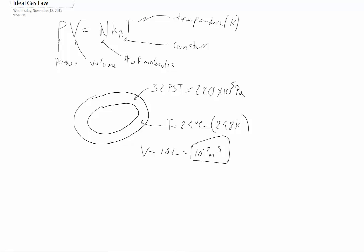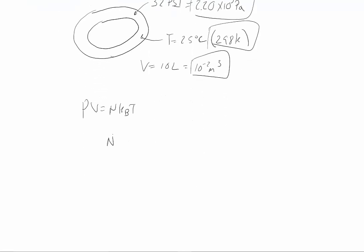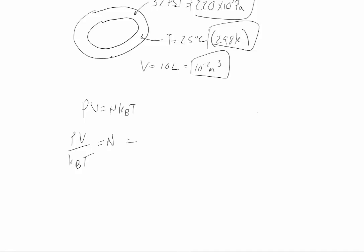So let's go ahead and use all of our values, and we can actually find how many gas molecules are inside of a normal tire. We'll just solve for N. So we get PV is equal to NkBT. We get N is equal to PV divided by kBT. If I plug in my numbers, we get 2.2 times 10 to the 5th Pascals.